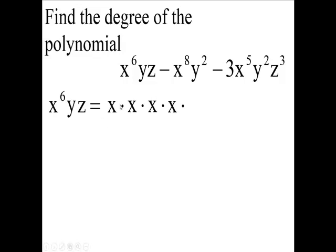One, two, three, four, five, six, and then a Y and a Z. So how many letters is that altogether? There's one, two, three, four, five, six, seven, eight letters. So the degree of the first term is eight.